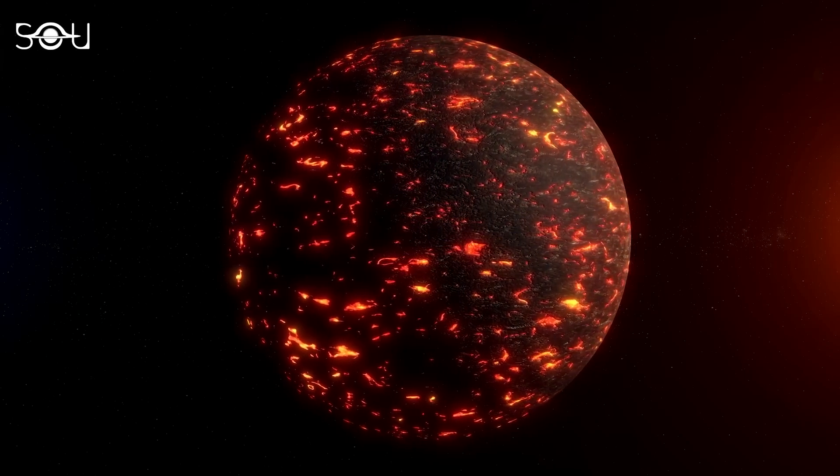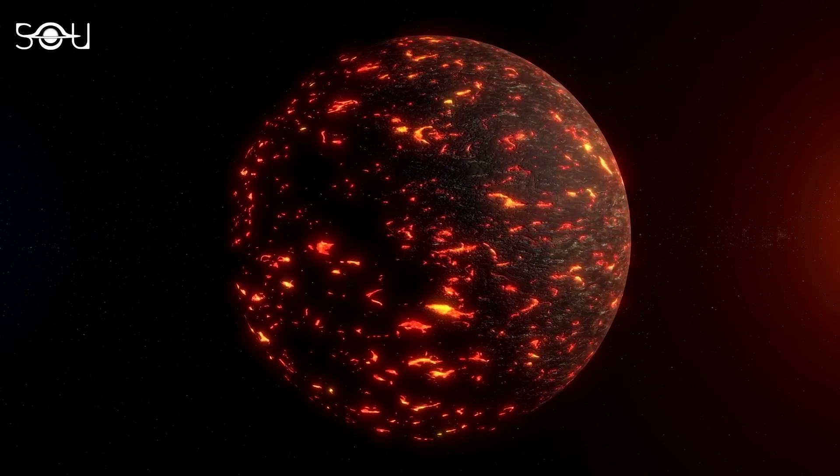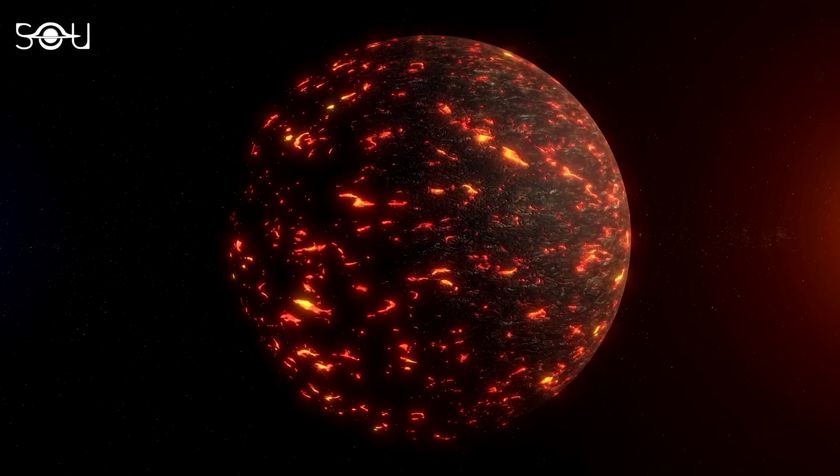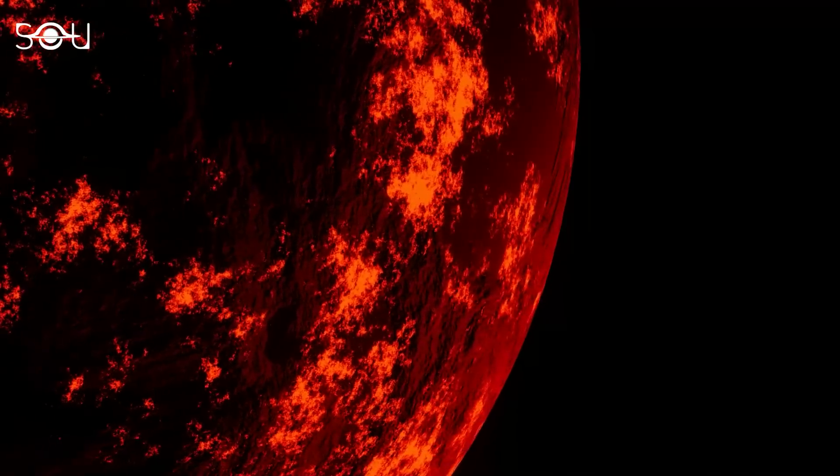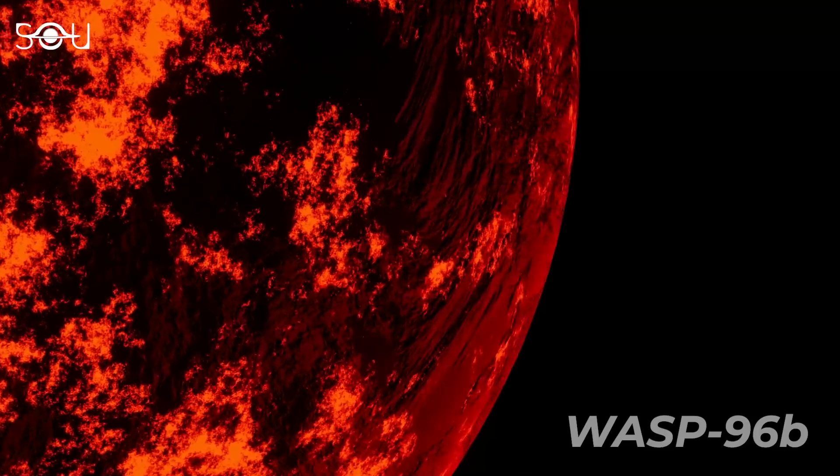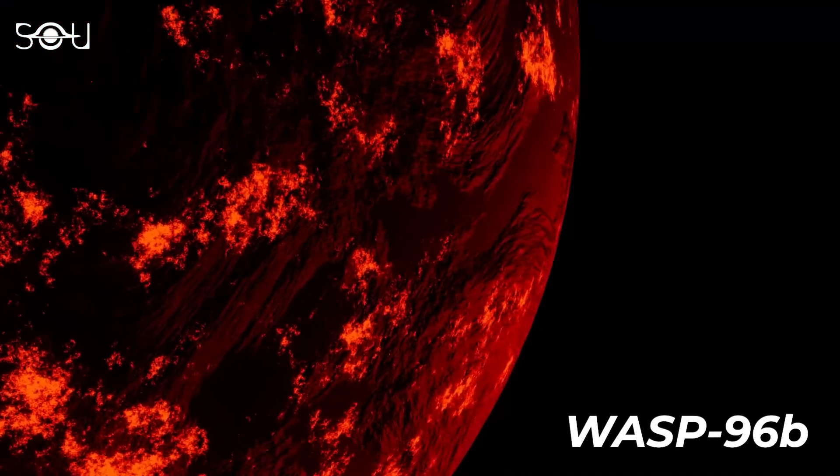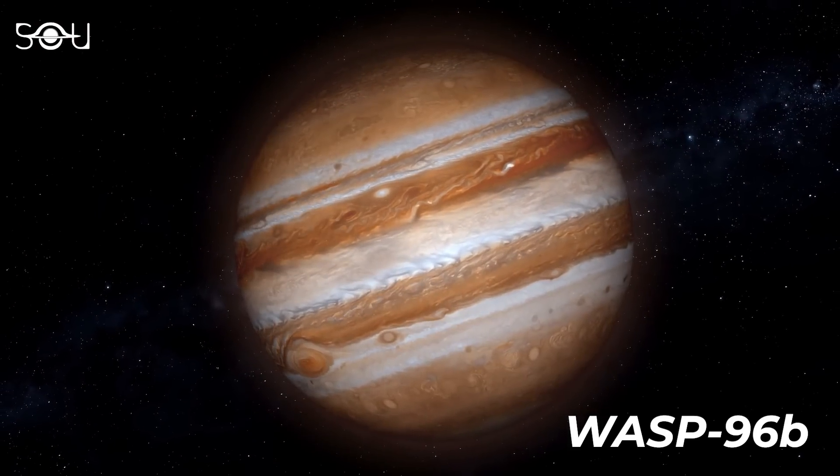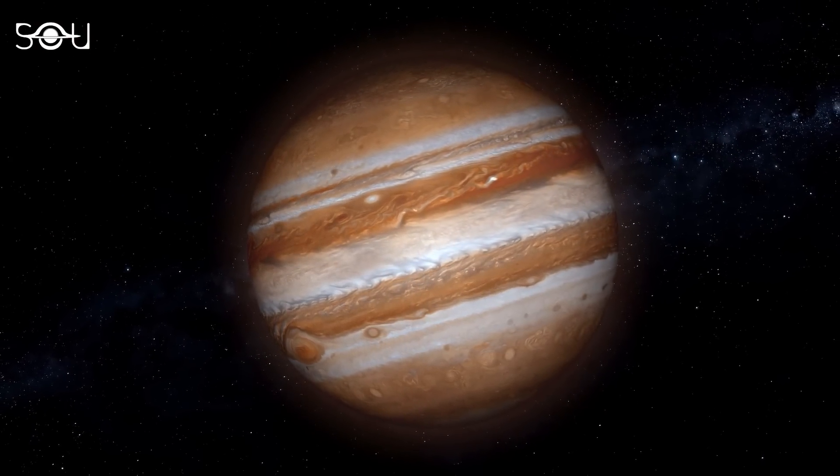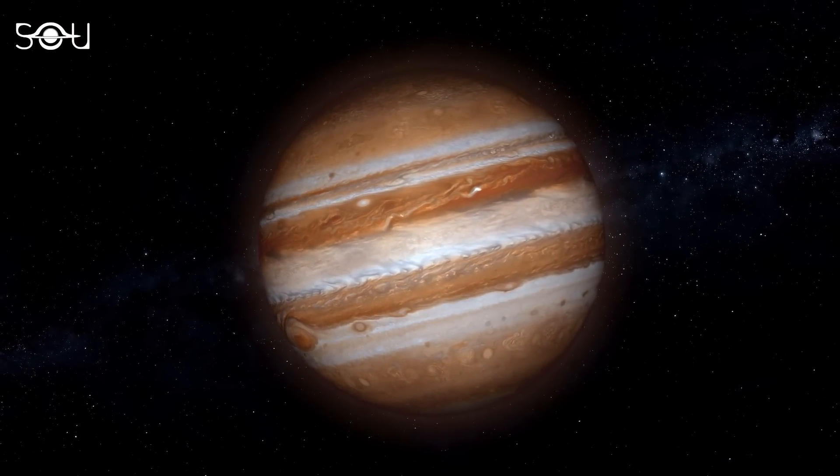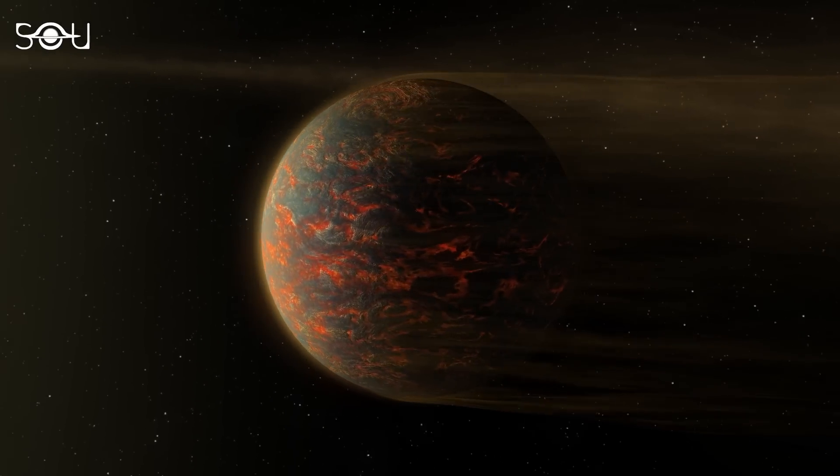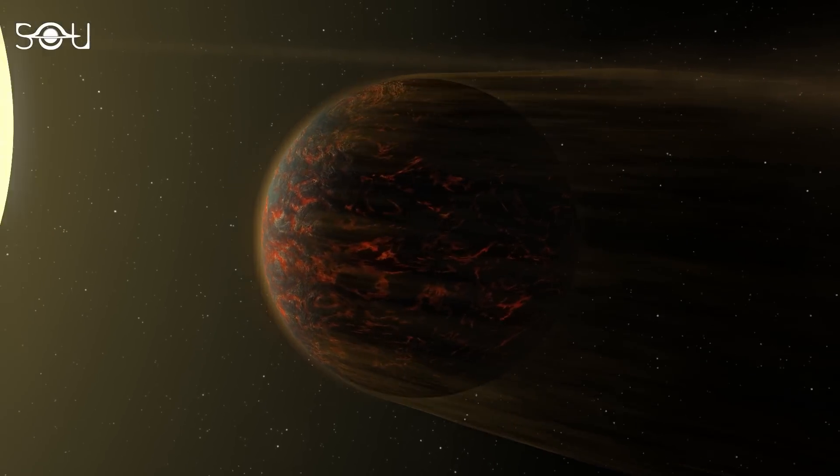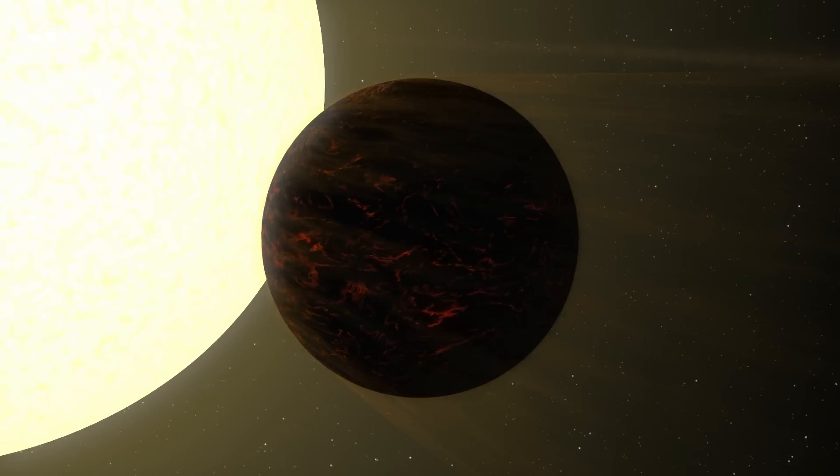After the condensed deep field image, NASA revealed the transmission spectrum of a scorching exoplanet lying almost 1100 light years away. It's a hot Jupiter named WASP-96b. With a mass of less than half of Jupiter and a diameter of 1.2 times more, WASP-96b lies so close to its parent star that it takes just three and a half days to complete one orbit.